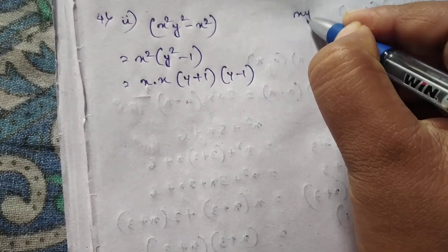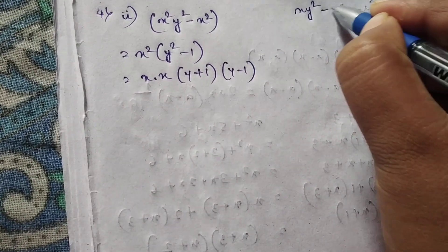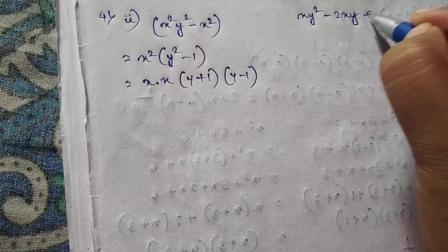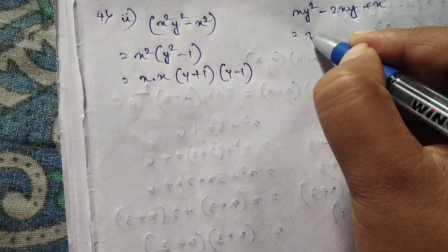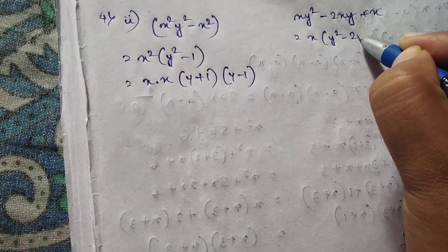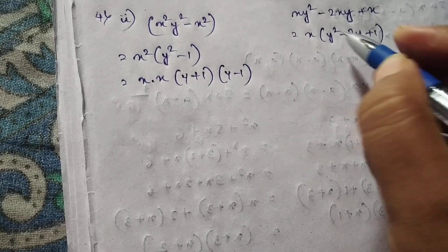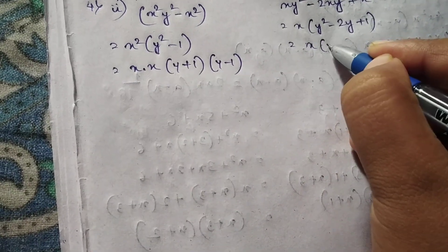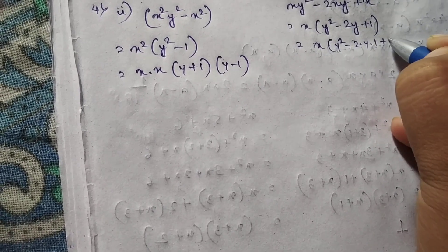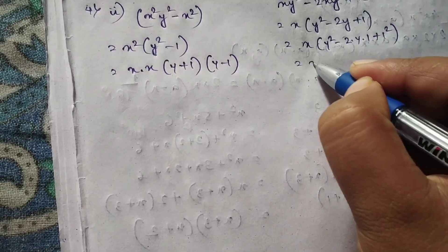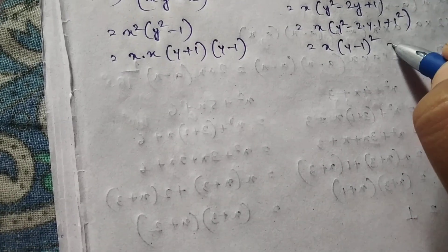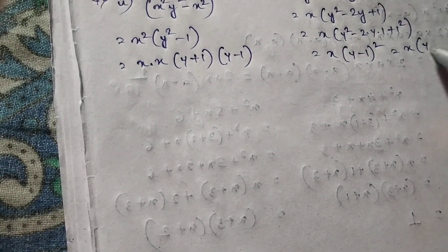xy squared minus 2xy plus x. xy squared minus 2y plus 1. xy minus one, whole squared — xy minus 1.